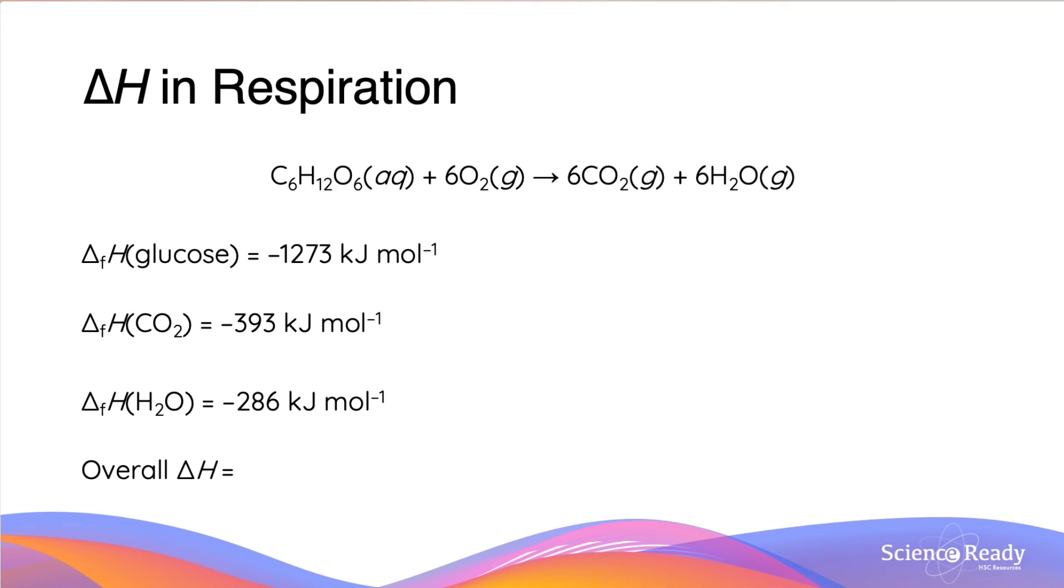In respiration, the overall delta H can be calculated using the same principles of enthalpy change that we looked at before. We have the delta H of formation of glucose which is negative 1,273 kJ per mole. But we know that this is the breaking, not the formation of glucose, and so we take the negative of this which is going to be positive 1,273 kJ per mole.